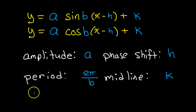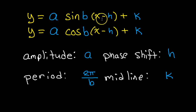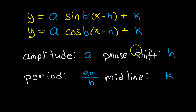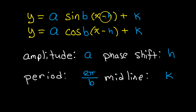Let me just bottom line it for you. If you have a sine function in this form — a·sin(b times x minus h) plus k — the amplitude is a. You get the period by doing 2π divided by b. The phase shift, which is a horizontal translation, is going to be h. Notice that the negative sign means you do the opposite of what it normally looks like, so if it's positive, you actually go to the left.